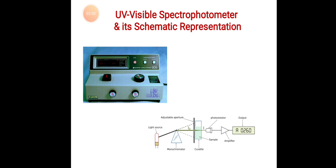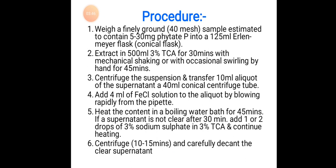Procedure: Weigh a finely ground 40 mesh sample estimated to contain 5 to 30 milligrams of phytate phosphate into a 125 ml Erlenmeyer flask (conical flask). Extract in 50 ml 3% TCA for 30 minutes with mechanical shaking or with occasional swirling by hand for 45 minutes.